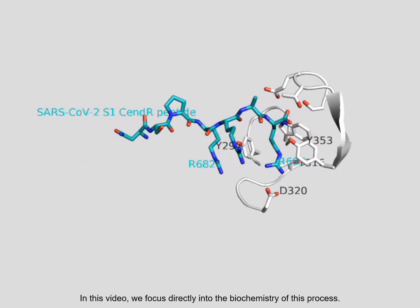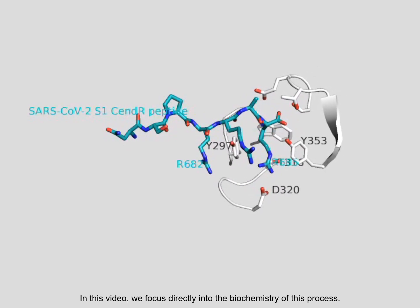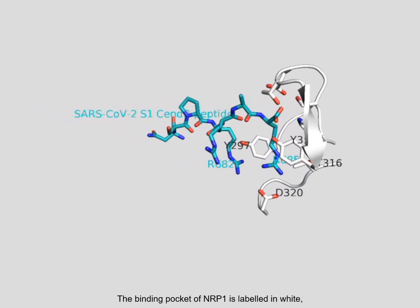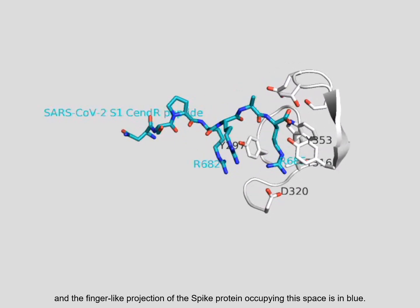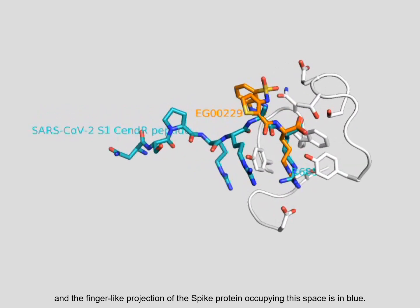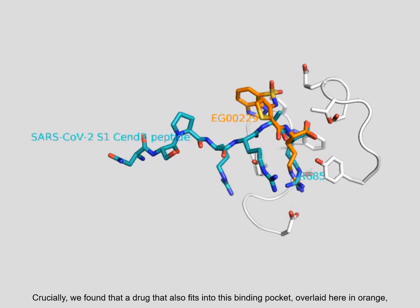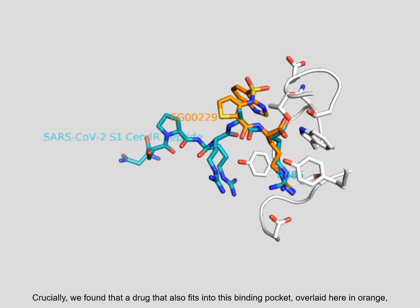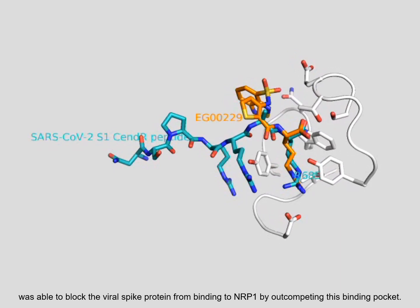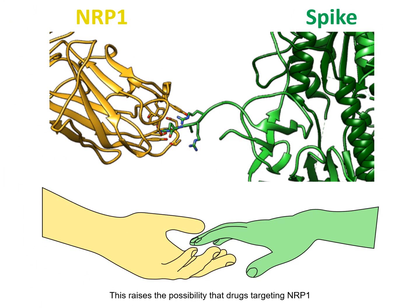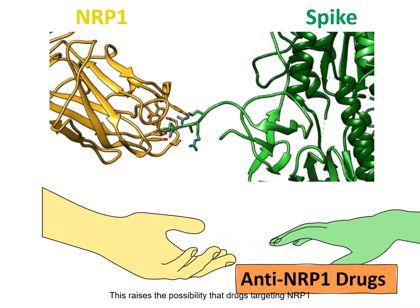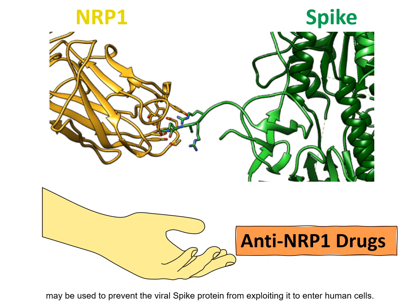In this video, we focus directly into the biochemistry of this process. The binding pocket of Neuropilin-1 is labelled in white, and the finger-like projection of the spike protein occupying the space is in blue. Crucially, we found that a drug that also fits into this binding pocket, overlaid here in orange, was able to block the viral spike protein from binding to Neuropilin-1 by out-competing this binding pocket. This raises the possibility that drugs targeting Neuropilin-1 may be used to prevent the viral spike protein from exploiting it to enter human cells.